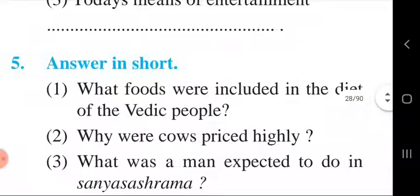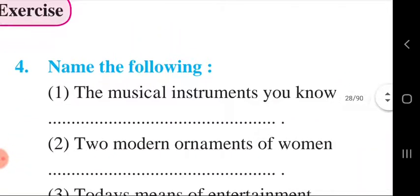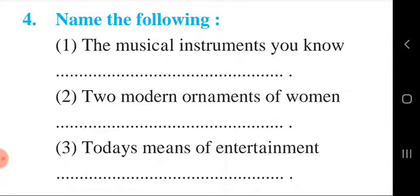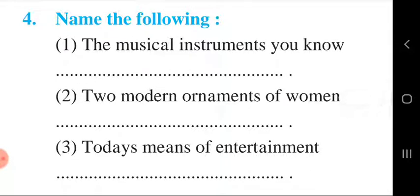Question number four: name the following. First — the musical instruments you know: harmonium and guitar. Second — two modern ornaments of women: bangles, necklace. Third — today's means of entertainment (not transport): television, adventure, sports.